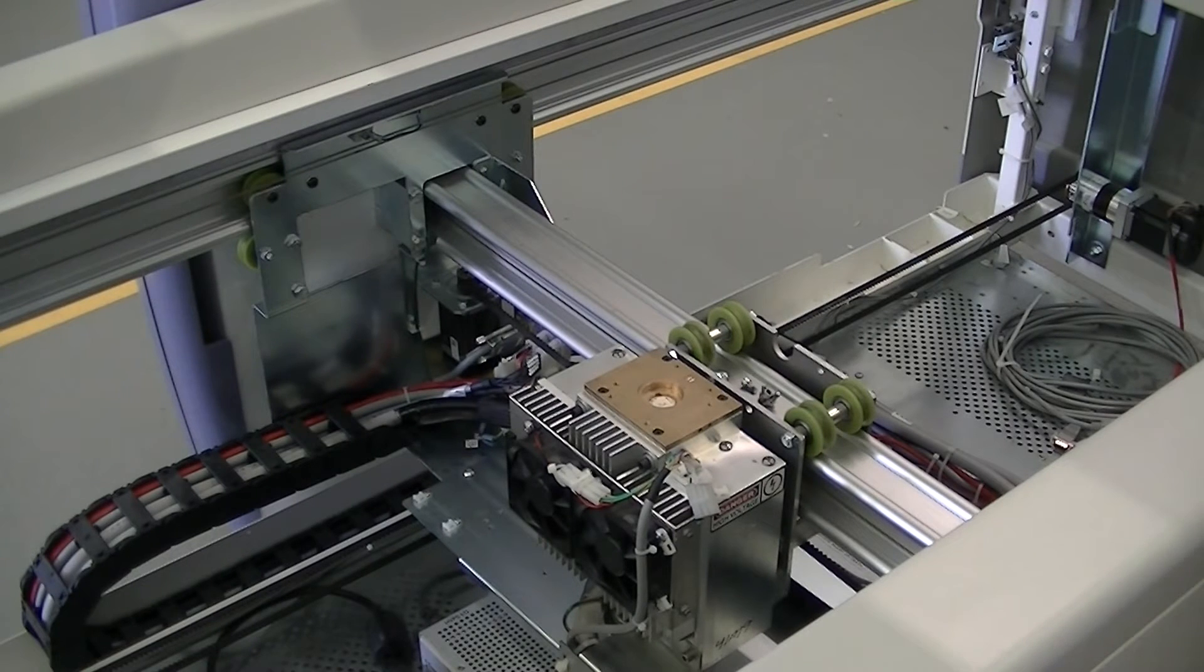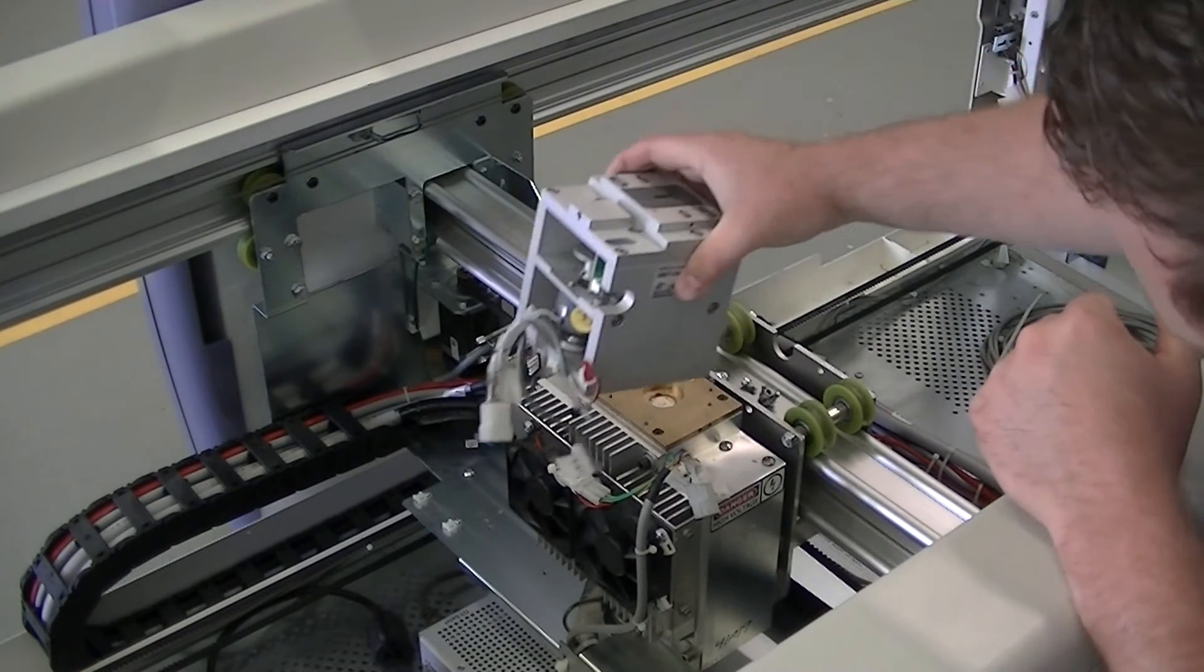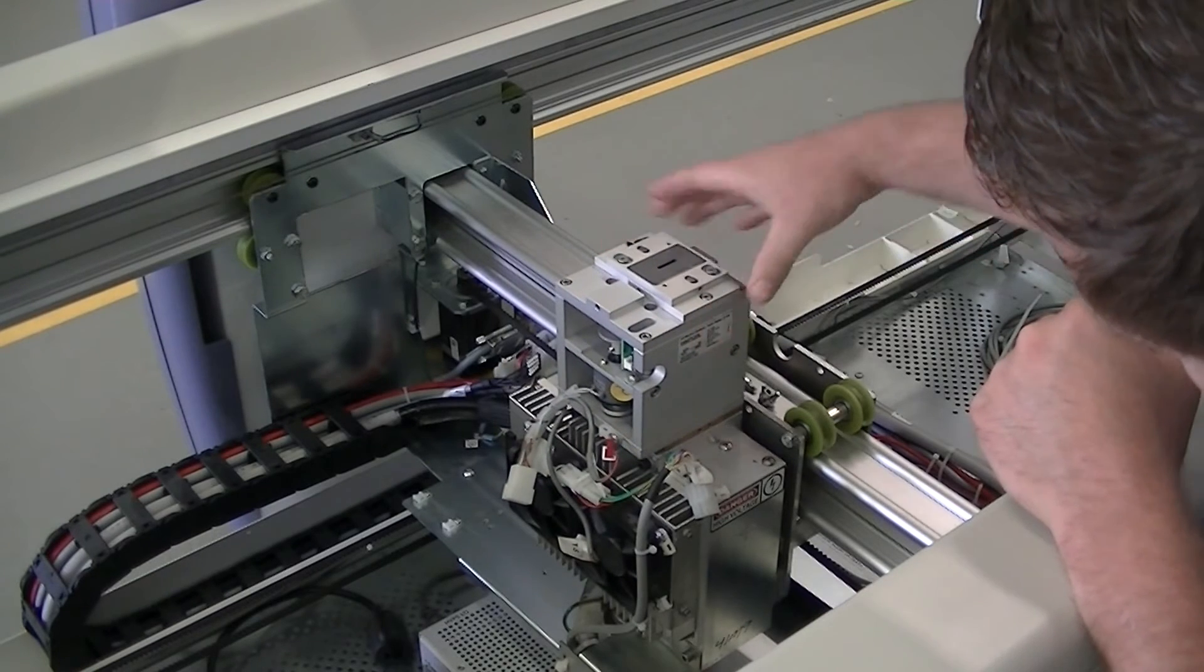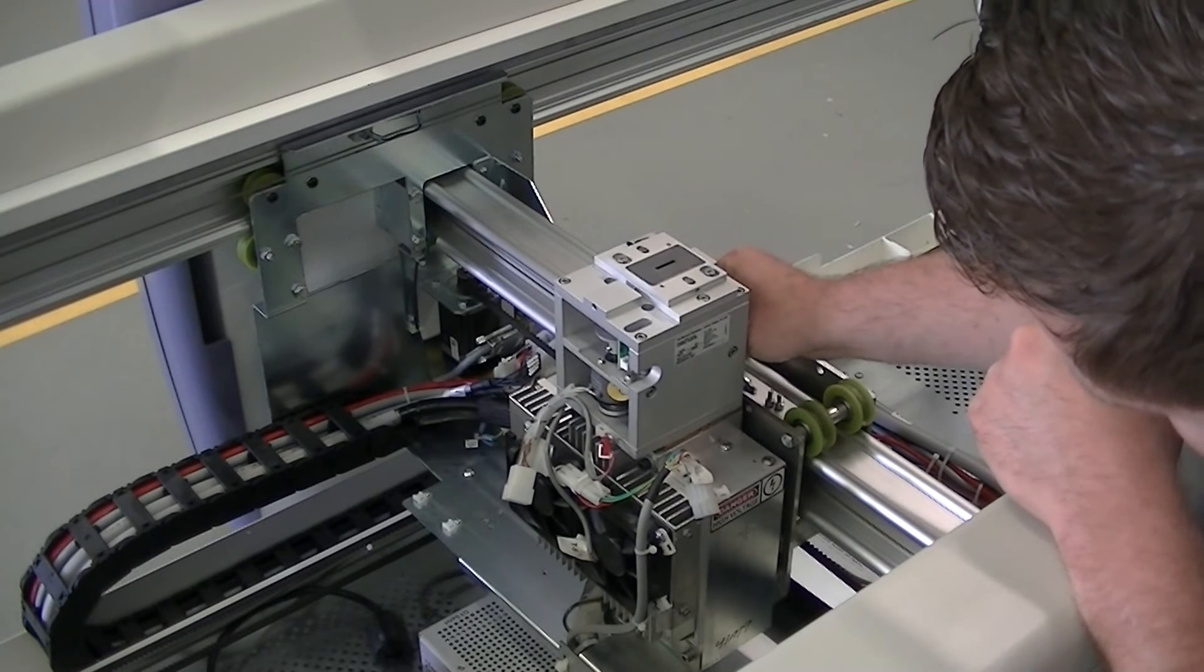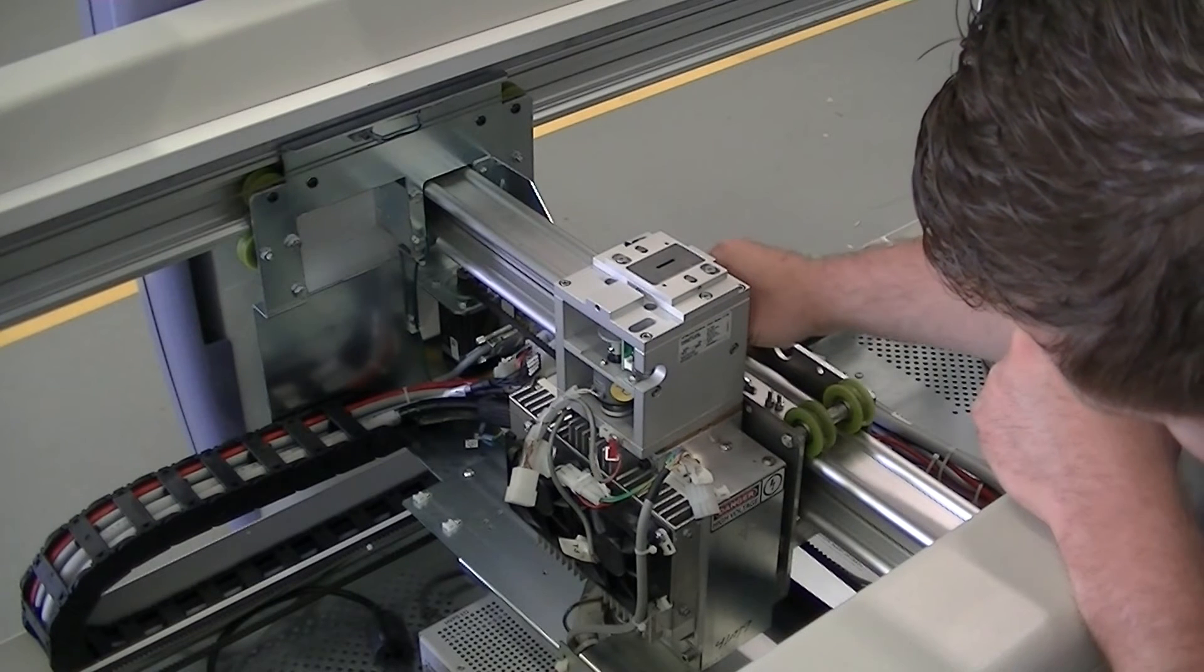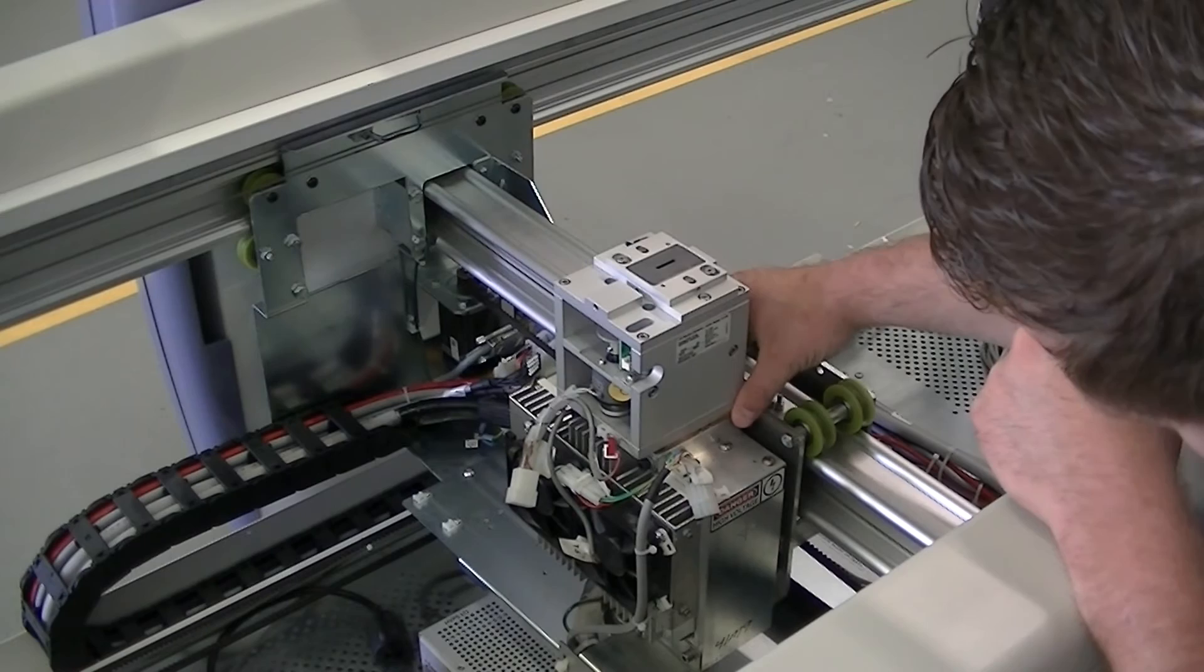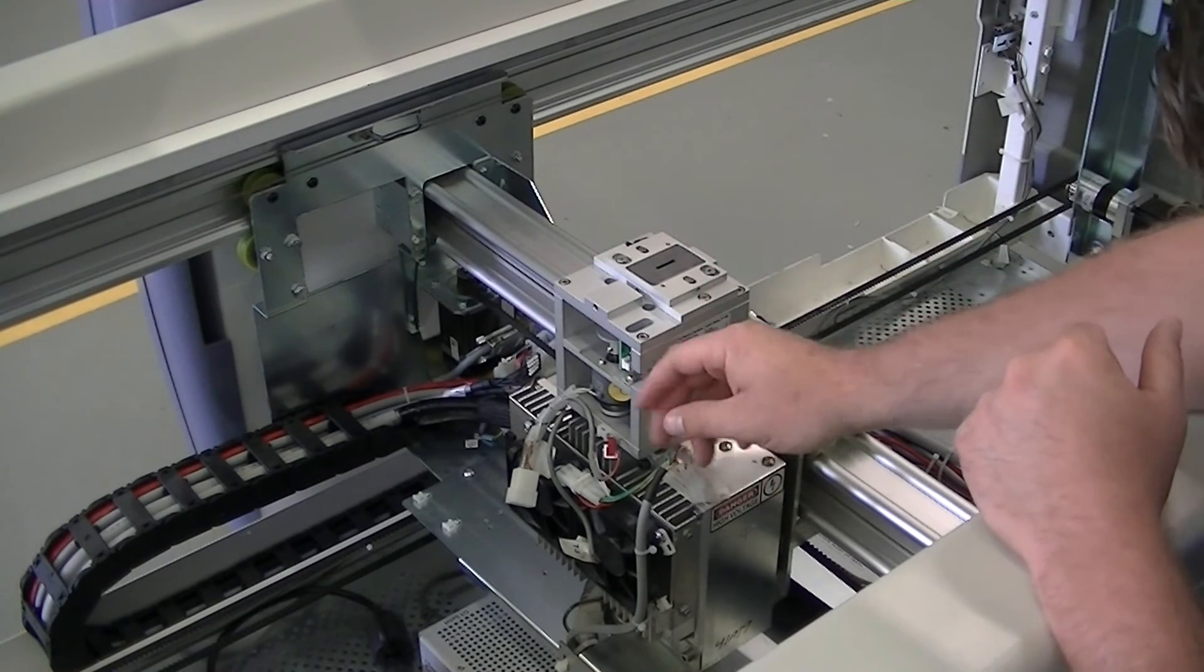After the tube has been verified that it's aligned, now we can put the collimator on. You do not want to put the collimator on until the tube head is actually aligned correctly. And then we want to hook up all the appropriate connections.